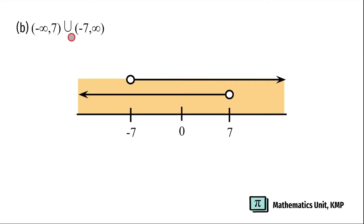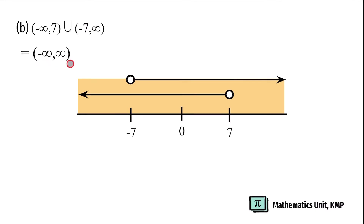Union means the section where at least one line is seen. So for this question, the section starts with negative infinity until positive infinity. We're going to write down the solution in interval form as negative infinity to positive infinity. Both are written using round brackets because negative infinity and positive infinity are not actual numbers.